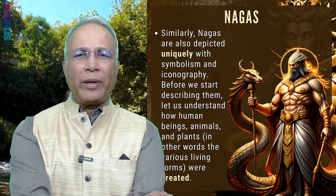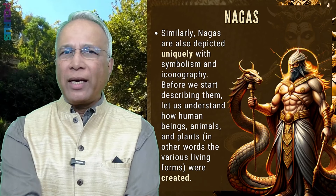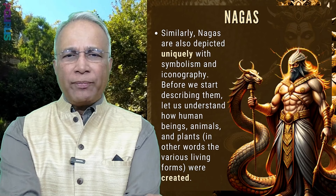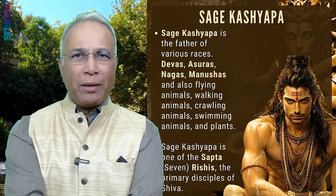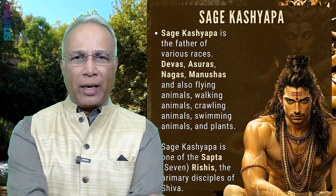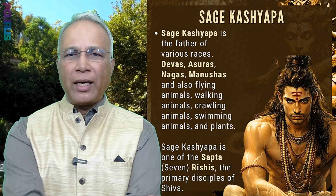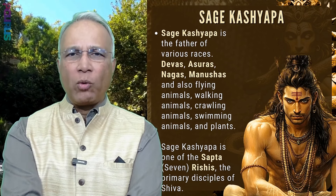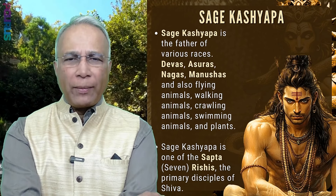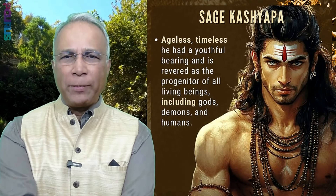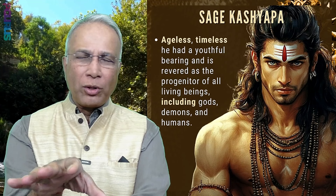Similarly, Nagas are also depicted uniquely with symbolism and iconography. Before we start describing them, let's understand how human beings, animals, and plants — in other words, the various living forms — were created. So we are going right back to creation time. Sage Kashyapa is the father of various races: Devas, Asuras, Nagas, Manushas, and also flying, walking, crawling, and swimming animals, and plants. Sage Kashyapa is one of the Sapta Rishis — the seven rishis — and the primary disciples of Shiva. There is a different story about the Sapta Rishis, which will be covered as a separate episode.